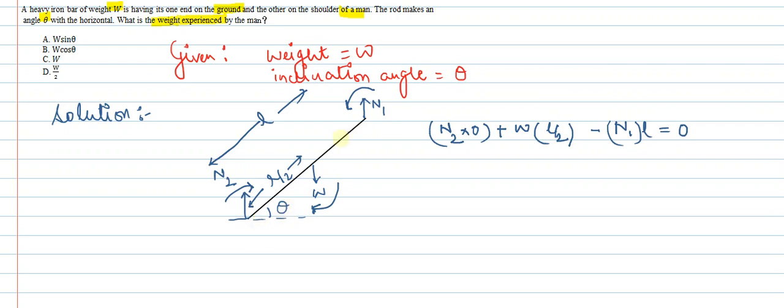N1 has perpendicular distance L. To find out, W into L by 2 equals N1 into L. So we will get N1 is equal to W by 2.